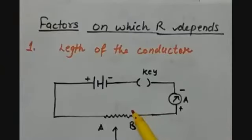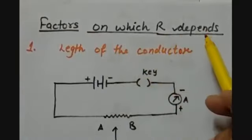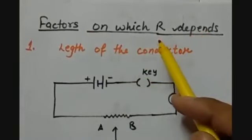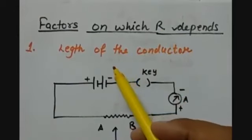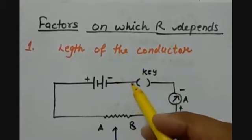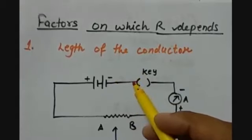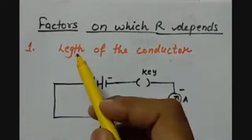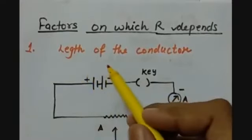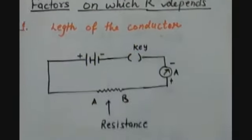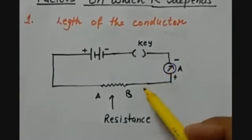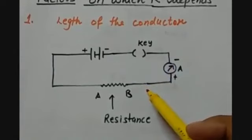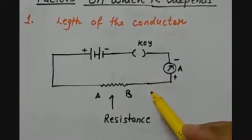Let us start discussing the factors on which the resistance depends. Generally, the resistance of an object depends on it — for example, if we are using a conducting wire, that will provide resistance to us. If we have to see the effect of length on the resistance of a conductor, here in front of you I have a circuit. As you have studied about the symbols which we use in circuit diagrams, here is our circuit diagram.